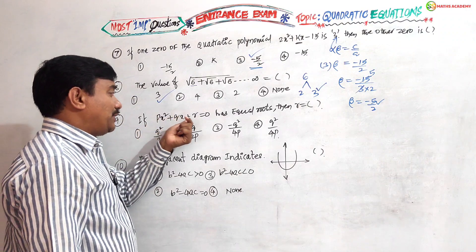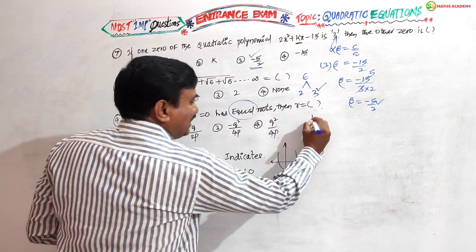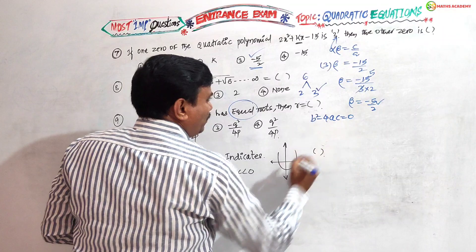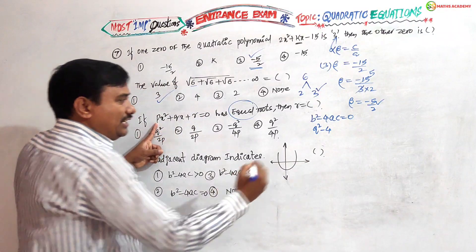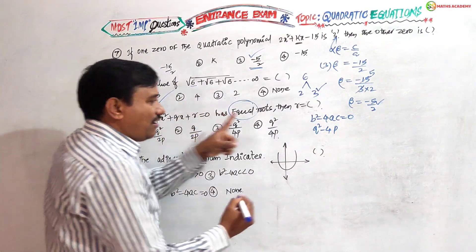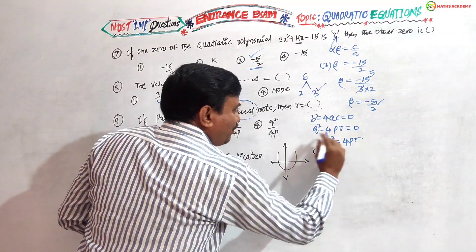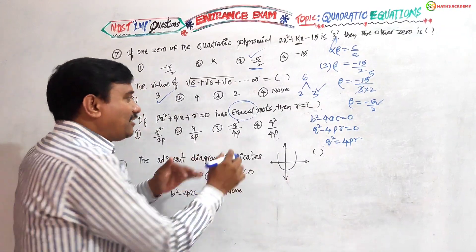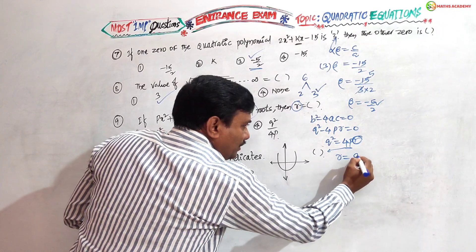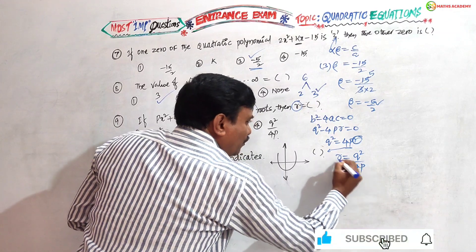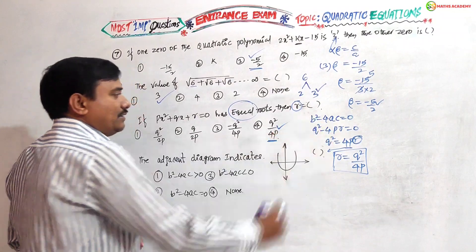Ninth question: if Px squared plus Qx plus R equals zero has equal roots, find R. Equal roots means b squared minus 4ac equals zero. Here b is Q, a is P, c is R. So Q squared minus 4PR equals zero, giving Q squared equals 4PR. Transposing, R equals Q squared by 4P. That is the answer.